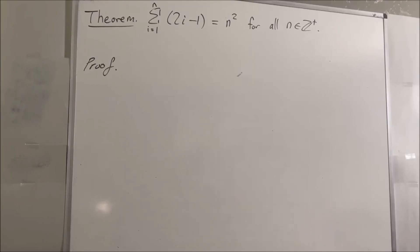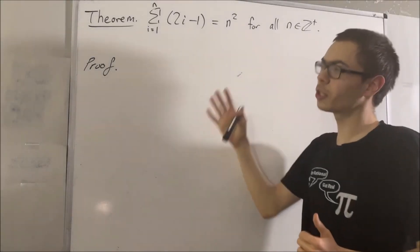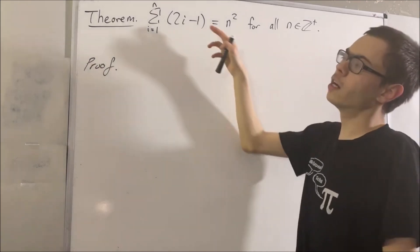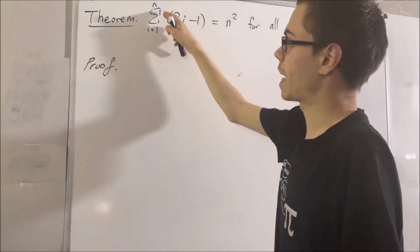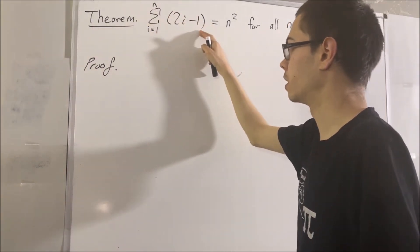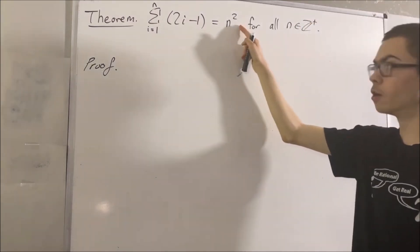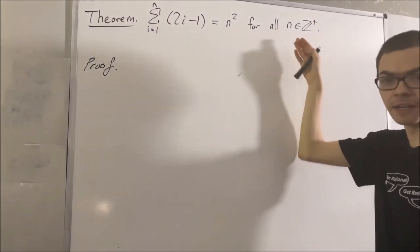Hello. In this video, we are going to prove the following theorem. The sum from i equals 1 to n of 2i minus 1 is equal to n squared for all positive integers n.